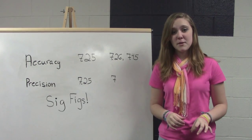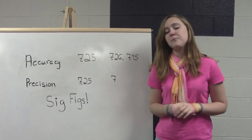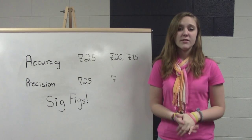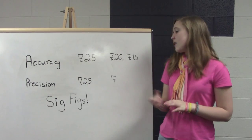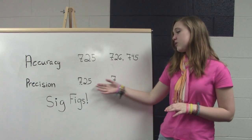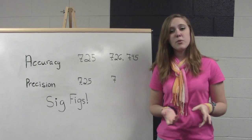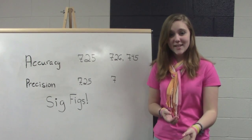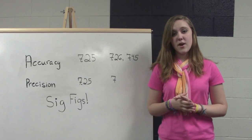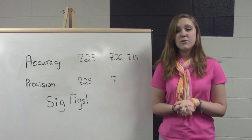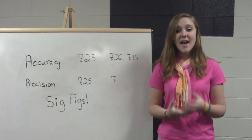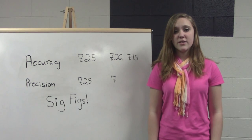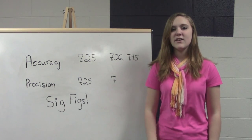Your second thing that you have to keep in mind is precision. Precision is how detailed a number you get from whatever device you are using in your experiment. We have 7.25 and the number 7. Now 7.25 is much more precise than the number 7, because it goes out to the second decimal place, whereas the number 7 doesn't go out any decimal places. So 7.25 is more precise. And that leads us to significant figures — there are three rules you will use to decide whether a number is significant or not.